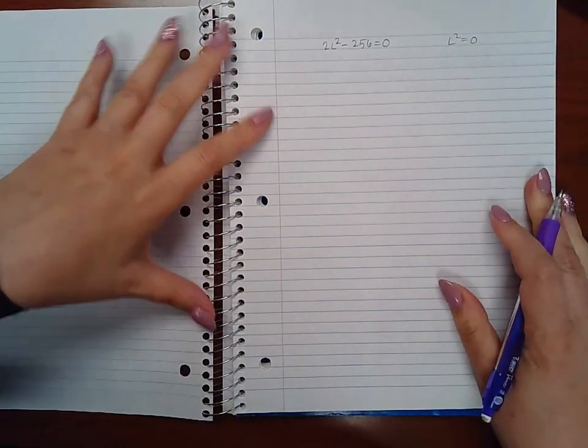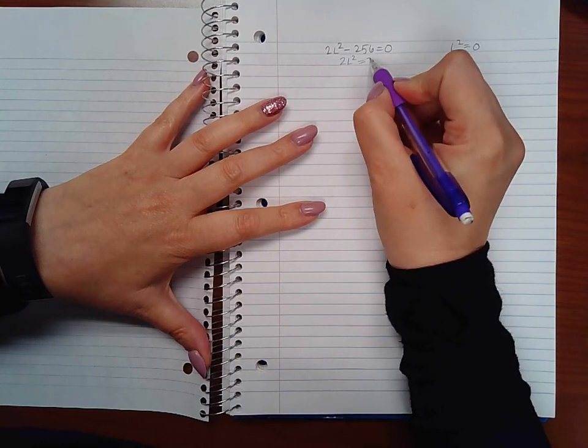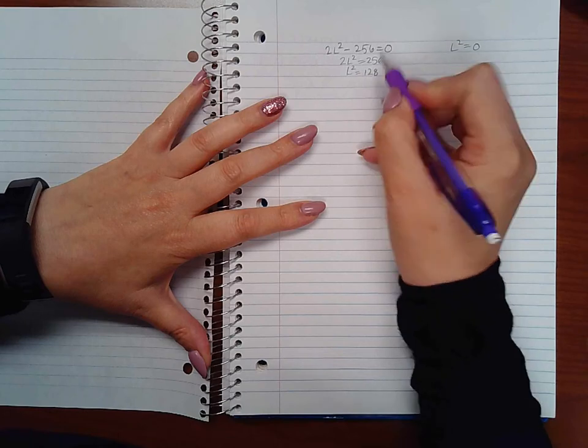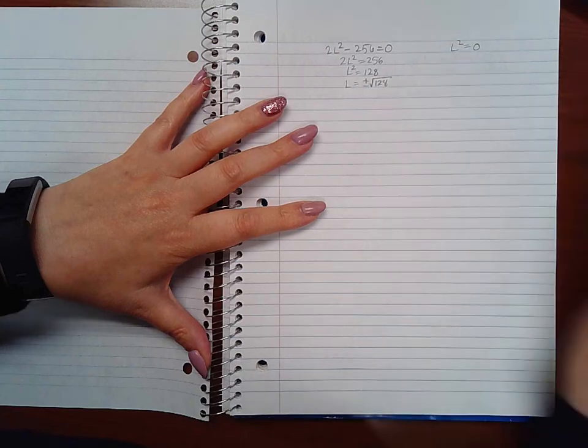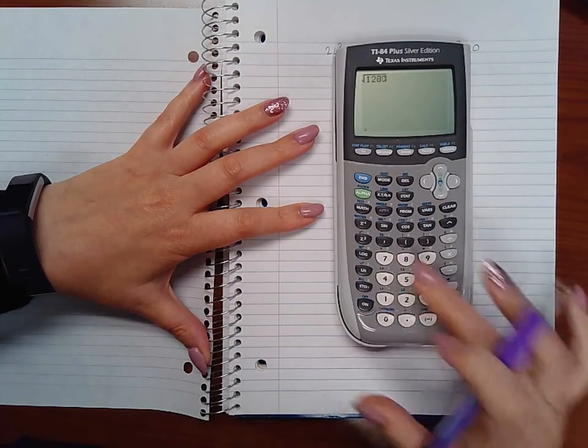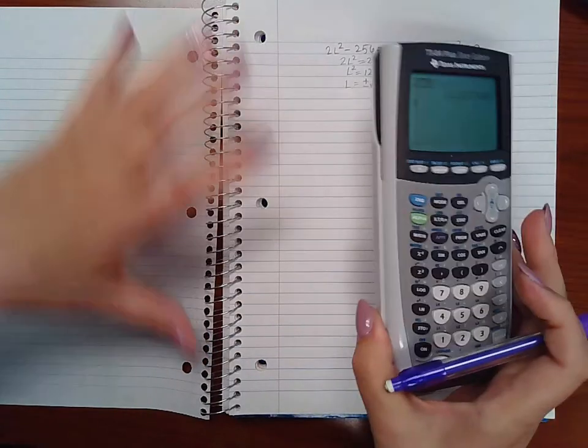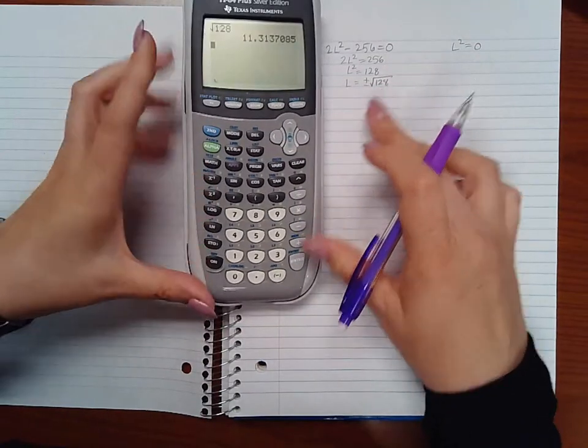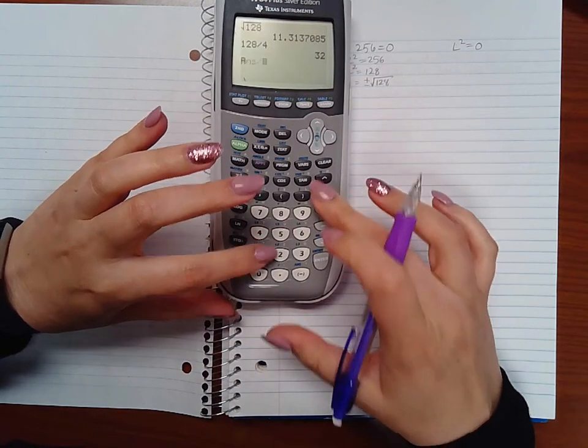Okay, so here I will add 256 to both sides, I will divide by 2 on both sides, and I will take the square root on both sides. And let's see, what is the square root of 128? We get about 11.3. And most times they will ask you to round. If not, you may have to break this up into its exact answer.